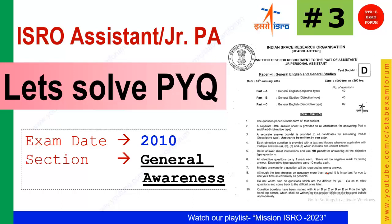Welcome to STB Exam Forum. We have come up with a new video on 'Let's Solve PYQ' and in this video we are going to solve the General Awareness section of the exam held in 2010. In the 2010 paper there is a section called Part B of General Study, which includes three things: current affairs, general awareness, and reasoning. In this particular part we will cover these two portions, and in the next video we will see the reasoning questions.